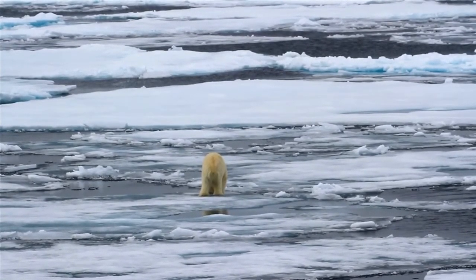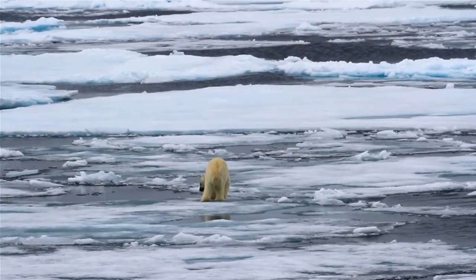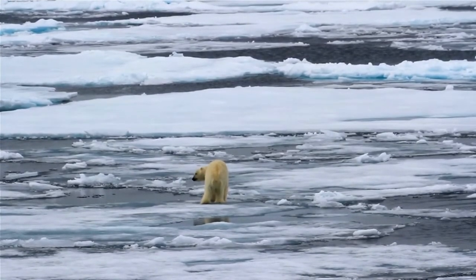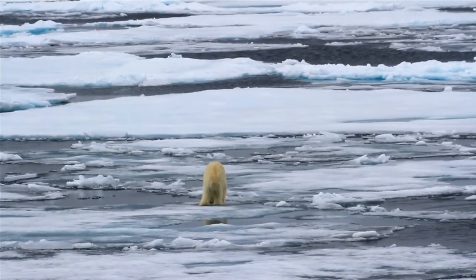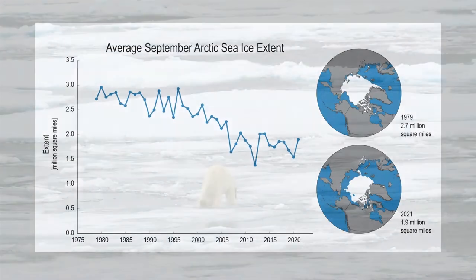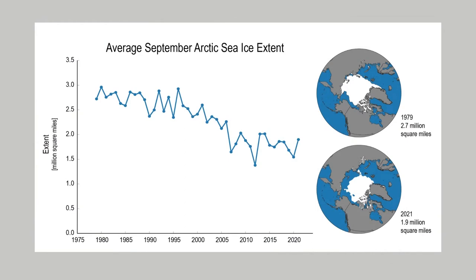But as the climate has warmed, we are seeing rapid decreases in Arctic ice extent, especially for the September minimum extent, which has continued to decrease over the past four decades. Some projections suggest that the Arctic will be virtually ice-free during summers by the middle of this century.